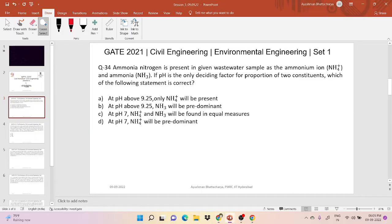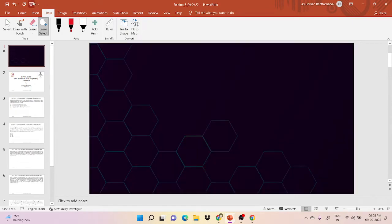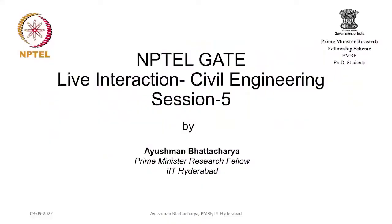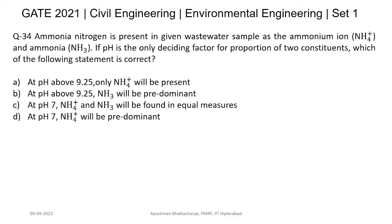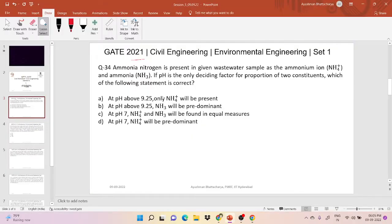Good evening everyone. This is our fifth session. Let's begin with the first question, which is a GATE 2021 question from Set 1. In this question, ammonia nitrogen is present in a given wastewater sample as the ammonium ion and ammonia. If pH is the only deciding factor for the proportion of the two constituents, which of the following options is correct?